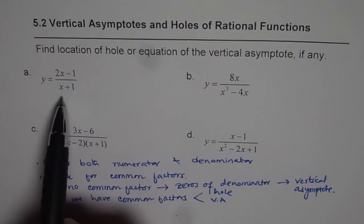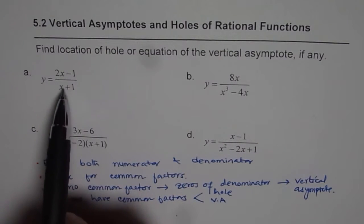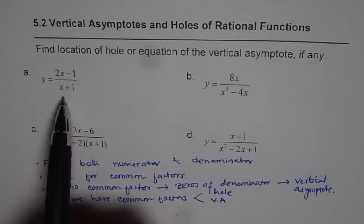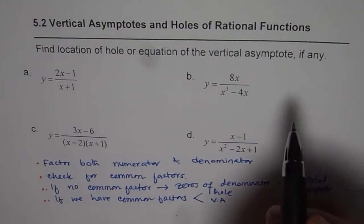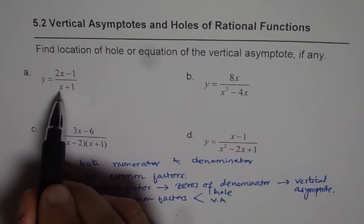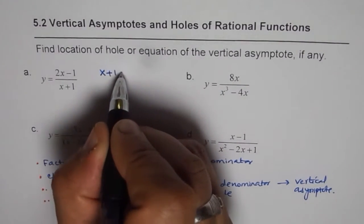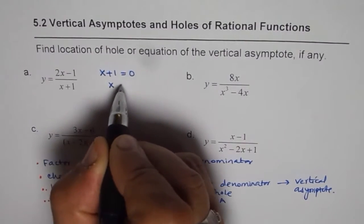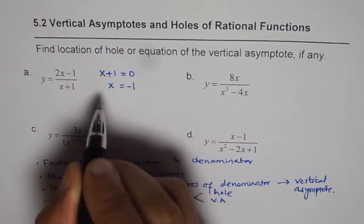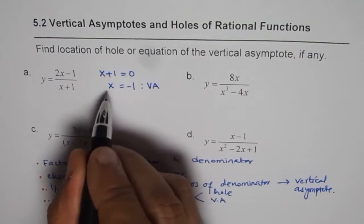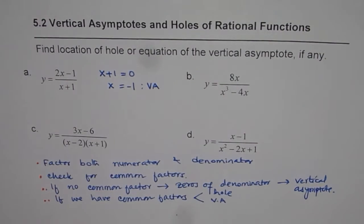The first one is (2x − 1) divided by (x + 1). They are already factored and there are no common factors. That means the denominator zero is going to give us a vertical asymptote — there are no holes. To find the vertical asymptote, we equate the denominator to zero: x + 1 = 0, giving us x = −1. That is the equation of our vertical asymptote.